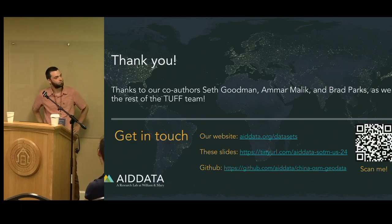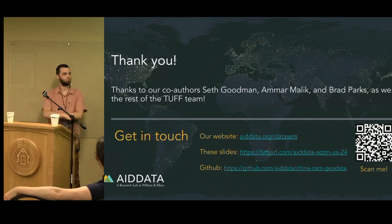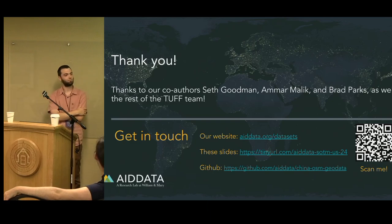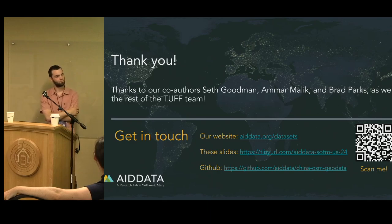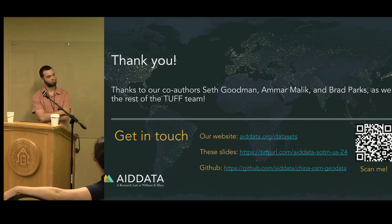Our workflow involved a really long data collection process. When we geocoded a project initially, the link might be broken three months later. So we had a regular data cleaning process to identify those broken links — either resolving them on our end, finding a new link, or making sure we had the correct feature right in OSM. Maybe some collaborator had a better, more precise link that we just needed to manually update.